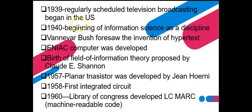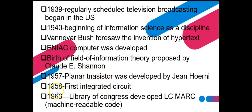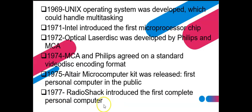In 1939, regularly scheduled television broadcasting began in the US — evidence of how powerful the US and Great Britain were in contributing to the evolution of information. In 1940, information science began as a discipline. The computer was developed, and the field of information theory was proposed by Claude Shannon in 1957. The planar transistor followed, and in 1958 the first integrated circuit was developed. In 1960, the Library of Congress machine-readable code was developed, and in 1969 the Unix operating system was developed. In 1971, Intel introduced the microprocessor chip.